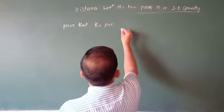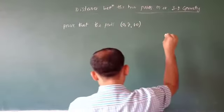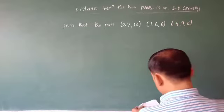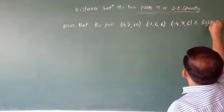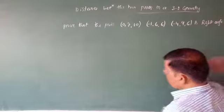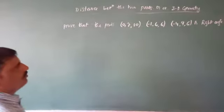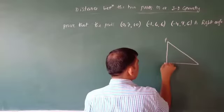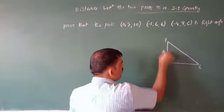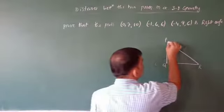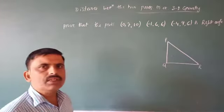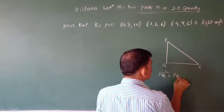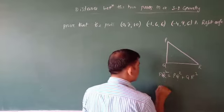Next problem: Prove that the points (0, 7, 10), (−1, 6, 6), and (−4, 9, 6) form a right-angle triangle. For a right-angle triangle, the square of one side must equal the sum of the squares of the other two sides: PQ² + QR² = PR².